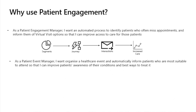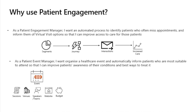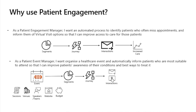As a patient event manager, I want to organize a healthcare event and automatically inform patients who are most suitable to attend, so I can improve patient awareness of the conditions and best ways to treat it. Patient engagement assists the event manager in setting up and organizing the event, including session planning, venues, speakers and teams involved in the event planning and execution, the event website, as well as budgeting for the event. Segmentation can then be used to define the right audience. Journeys can then be used to inform patients of the event, as well as sending them reminders leading up to the event. Patient engagement will automatically track engagement with the emails, as well as interactions with the event site.